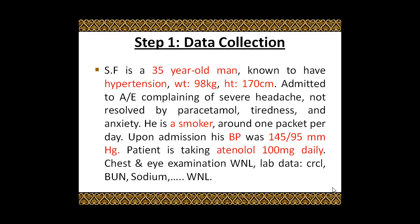According to what I discussed in the previous videos, step one is data collection. The information we collect: the patient is a 35-year-old man with hypertension, weight 98 kg, height 170 cm, and he is a known smoker. His blood pressure upon admission was 145 over 95 mmHg. For medication history, he is taking atenolol 100 mg daily. Examination and lab results were all within normal levels.